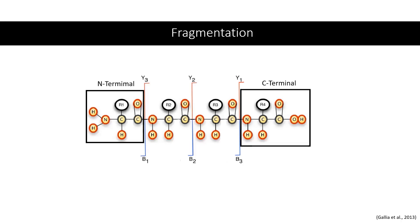At each break, you will see that there is a part of the fragment associated with the N-terminal and part of the fragment associated with the C-terminal. The fragments associated with the N-terminal are called B-ions, and the fragments associated with the C-terminal are called Y-ions.